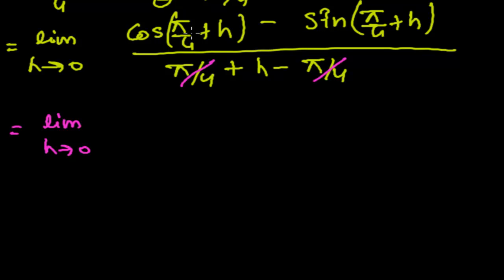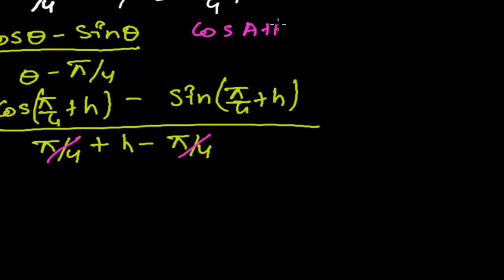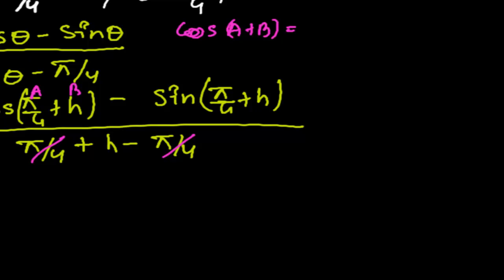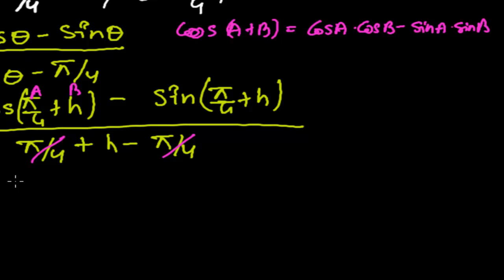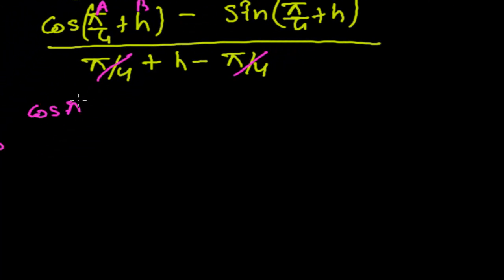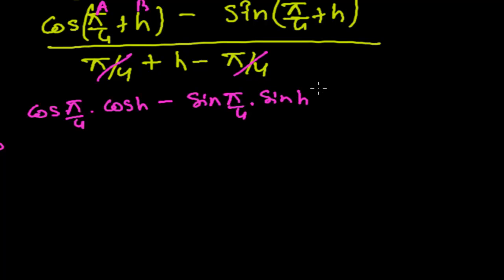Now cos(pi by 4 plus h) is of the form cos(A plus B), where A is pi by 4 and B is h. Using the formula cos(A+B) = cos A·cos B − sin A·sin B, we get cos(pi by 4)·cos h − sin(pi by 4)·sin h. Now let's deal with the sine part.